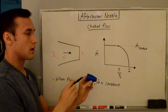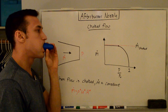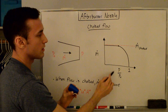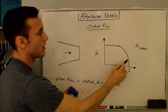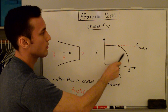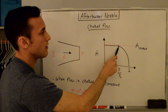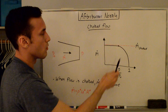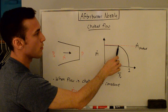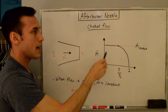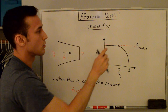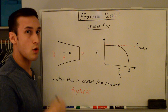Mass flow rate only increases up to a certain point, which we call the choked point. If you pull the pressure ratio down further past this point, you will not get any higher mass flow rate through your nozzle. So for a certain nozzle geometry, there is only so much mass flow rate that can pass through.